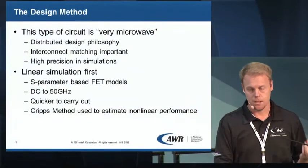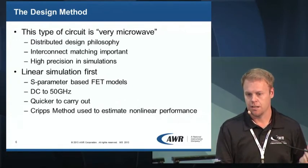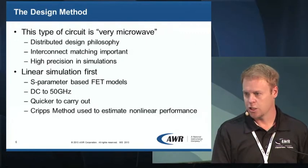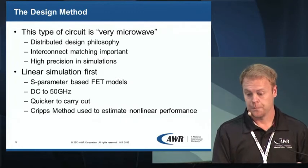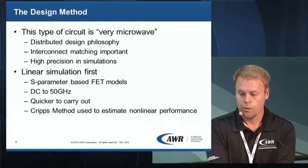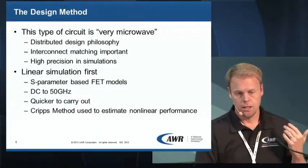To kick things off with the design simulation, you want to start with linear simulation — it's simpler and fast. You can do all kinds of circuit manipulations and get your answers almost in real time. You can start at DC and go out to 50 gigahertz, no problem. The last point here is that we're going to use the CRIPS method to approximate nonlinear performance, because a full nonlinear harmonic balance simulation or transient simulation takes time. When you're still in the tweaking phase, if you want nonlinear results at linear speed, you use the CRIPS method.